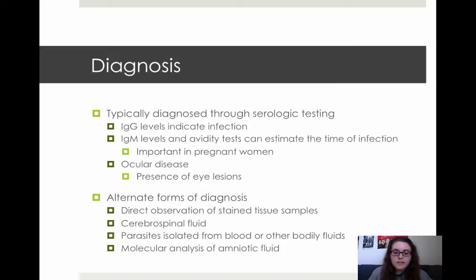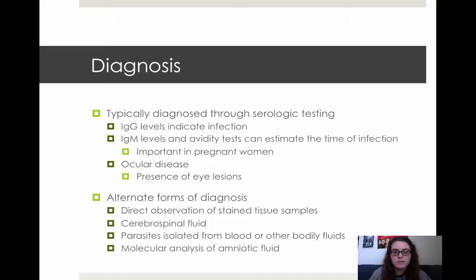This can also be diagnosed through direct observation of stained tissue samples, where you can look for bradiozoites, as well as through various other fluids, so you can check cerebrospinal fluid, and you can also find live parasites in blood or other bodily fluids. In the case of congenital infection, you can typically molecularly analyze amniotic fluid, and that will show DNA from the toxoplasmosis parasite if there is a risk of congenital infection.